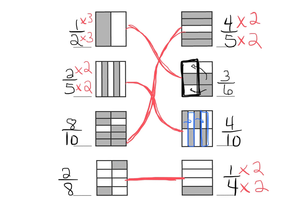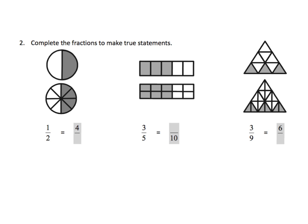By a process of elimination, we see that these guys are connected — they're equivalent fractions because one times two gives us two, and four times two gives us eight. Sure enough, those pictures make sense. If I take this piece and move it down here, I get a full bar, just like over here. And we're also going to look for the relationship: one times four is four, two times four is eight.